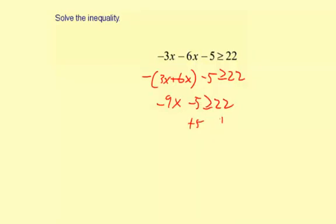Next thing is add 5 to both sides. So we have negative 9x, and then negative 5 plus 5 makes 0. So we're going to put greater than or equal to 22 plus 5 is 27.